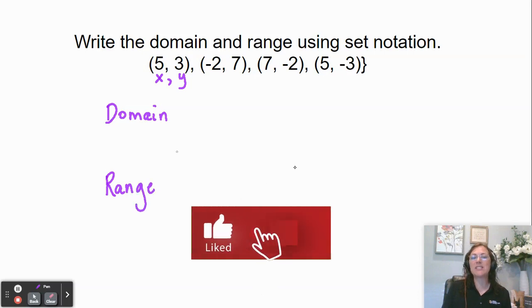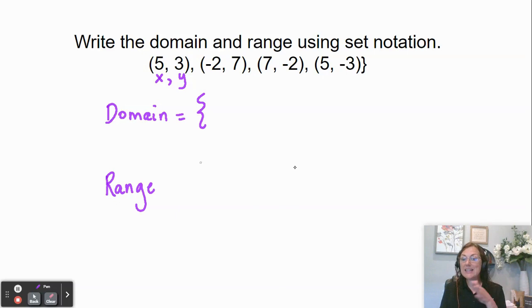Now when we write this with set notation, we use the curly braces and we list the x values. Generally we list them in numerical order, but I'm going to do that first not in numerical order and then I'll rewrite them in numerical order. So the first x is 5, and then -2, and then 7, and then the last one is another 5, but we don't have to write it again. We only write it one time.